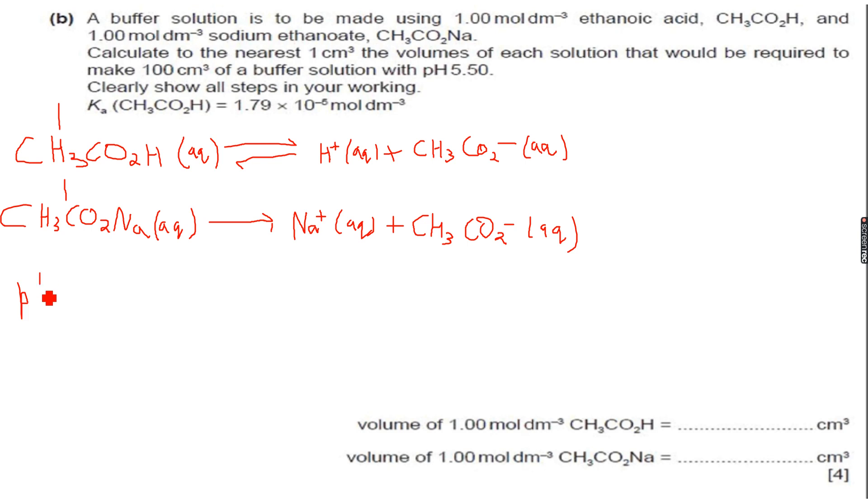So now let's apply the Henderson-Hasselbalch equation, which is pH equals pKa plus log₁₀ of [CH₃CO₂⁻], which is the conjugate base A⁻ in this case, over [CH₃CO₂H], which is the acid HA in this case. So conjugate base concentration over the concentration of the acid.